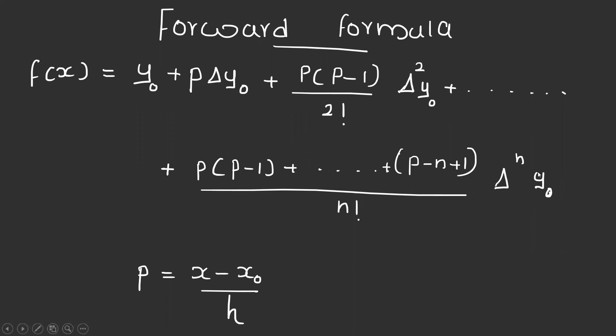The value of p is equal to (x - x₀)/h, where x is the given value, x₀ is the initial value, and h is the difference between x₁ and x₀.